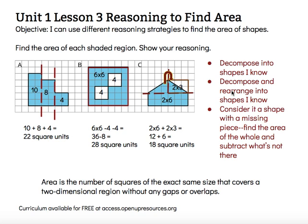Our objective says: I can use different reasoning strategies to find the area of shapes. I can decompose, I can decompose and rearrange, or I can consider the whole shape and take away the pieces that aren't there. There are lots of other strategies you might use to find the area of shapes that aren't familiar or that you don't have a formula for yet. Thank you for watching.